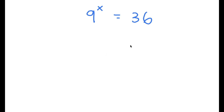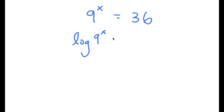In this problem, I have 9 to the power of x is equal to 36. To start, I'm going to take the log on both sides. So now I have log 9 to the power of x is equal to log 36.